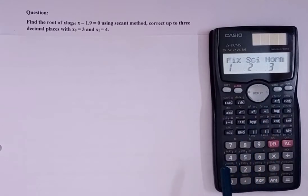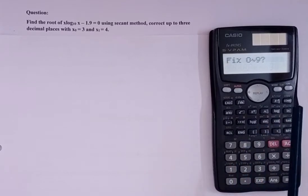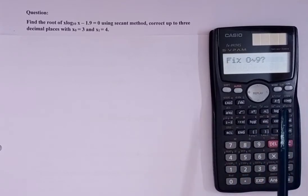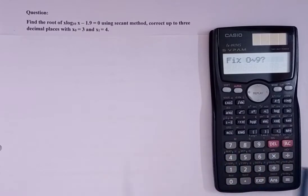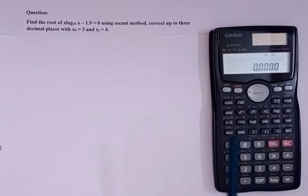You will have to press Mode 5 times. Then, as you can see, this shows 'Fix'. Press 1. You can fix it from 0 to 9 as per your choice or as asked in the question. Here, I am keeping it up to 4 decimal places.